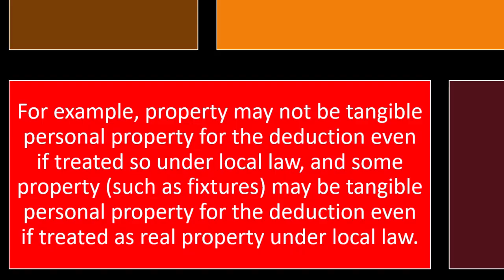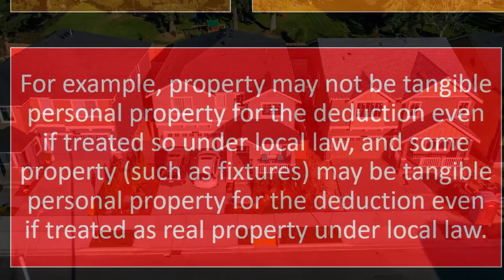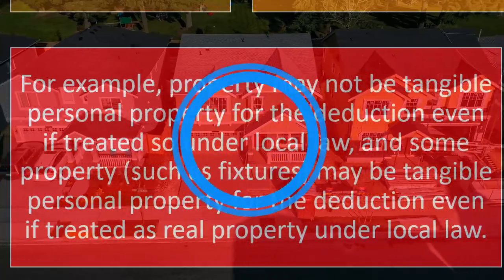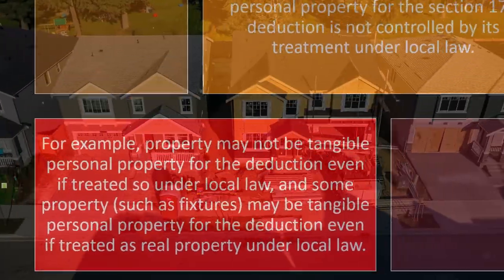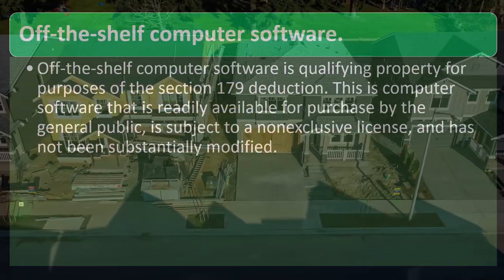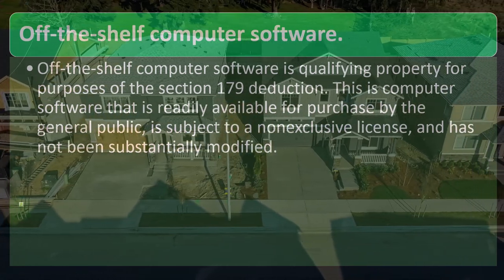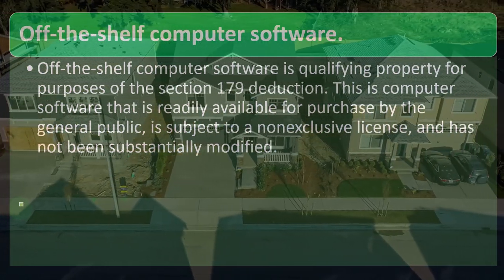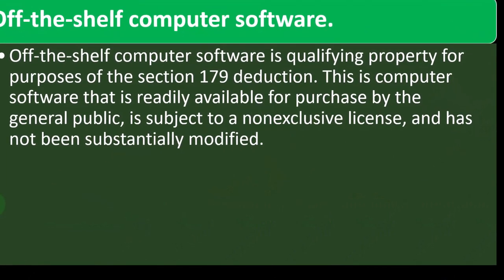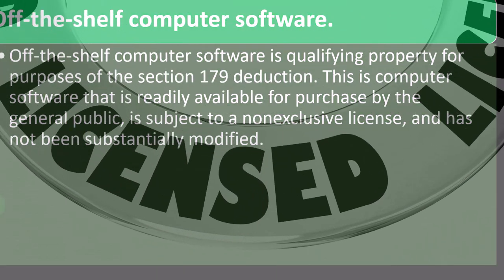Property may not be tangible personal property for the deduction even if treated so under local law. And some properties, such as fixtures, may be tangible personal property for the deduction even if treated as real property under local law. Off-the-shelf computer software is qualifying property for purposes of the Section 179 deduction. This is computer software that is readily available for purchase by the general public, is subject to a non-exclusive license, and has not been substantially modified.